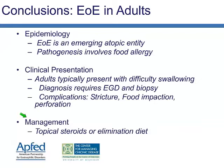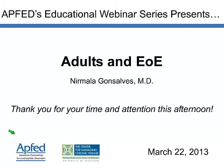In conclusion: EOE is an emerging atopic entity whose pathogenesis involves food allergies, similar to children. The typical clinical presentation in adults is difficulty swallowing and food impaction. Diagnosis requires endoscopy with biopsy. Complications include strictures, food impactions, and perforation. Management hinges upon topical corticosteroids or an elimination diet, and that decision should be individualized through conversation with patients. Thank you all for your time and attention.